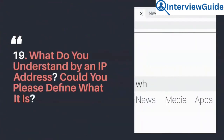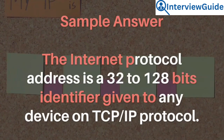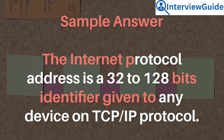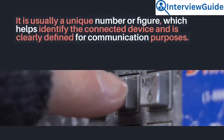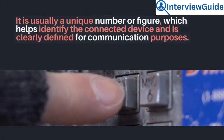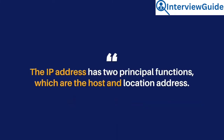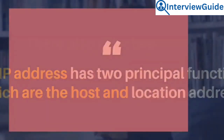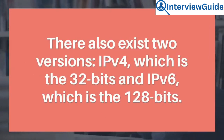Question 19: What do you understand by an IP address? The Internet Protocol address is a 32 to 128-bit identifier given to any device on TCP/IP protocol. It is usually a unique number or figure that helps identify the connected device and is clearly defined for communication purposes. The IP address has two principal functions: host and location address. There also exist two versions — IPv4, which is 32 bits, and IPv6, which is 128 bits.